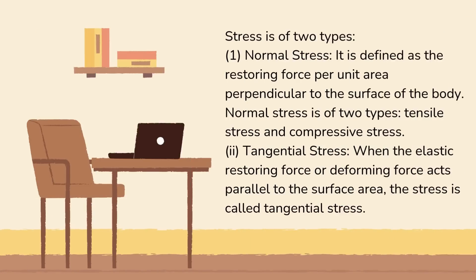Stress is of two types. 1. Normal stress: it is defined as the restoring force per unit area perpendicular to the surface of the body. Normal stress is of two types, tensile stress and compressive stress. 2. Tangential stress: when the elastic restoring force or deforming force acts parallel to the surface area, the stress is called tangential stress.